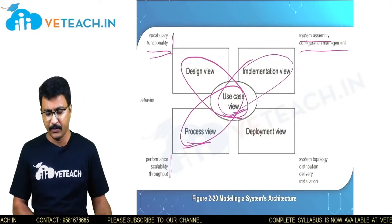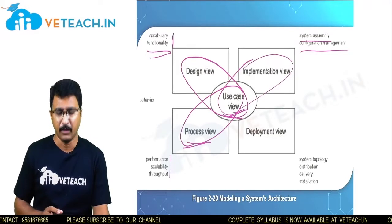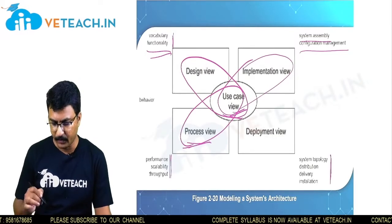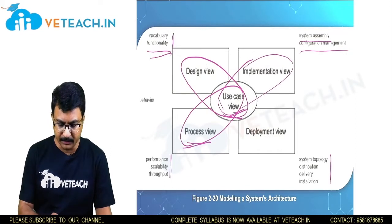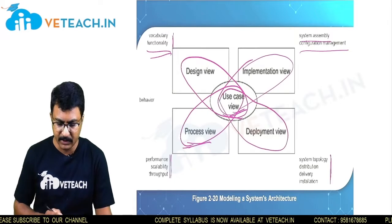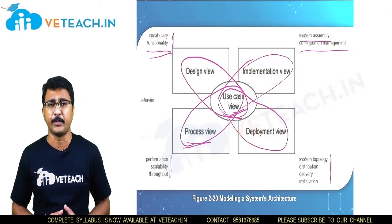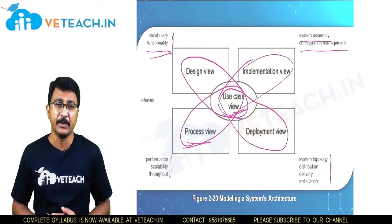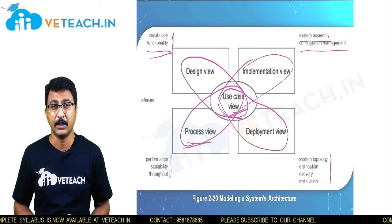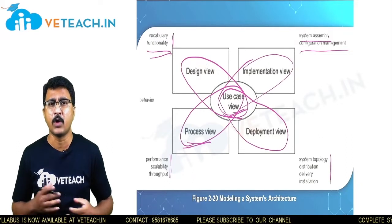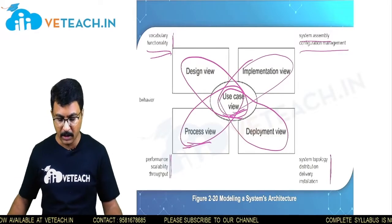Then comes the deployment view, where all behaviors are rendered physically, located somewhere — according to topology, distribution, delivery, installation, product time, and planning. It is not that we need all views for every project. All views may be applicable for very complex problem domains, but simpler problem domains can be solved using one or two perspectives. No need to render all views.